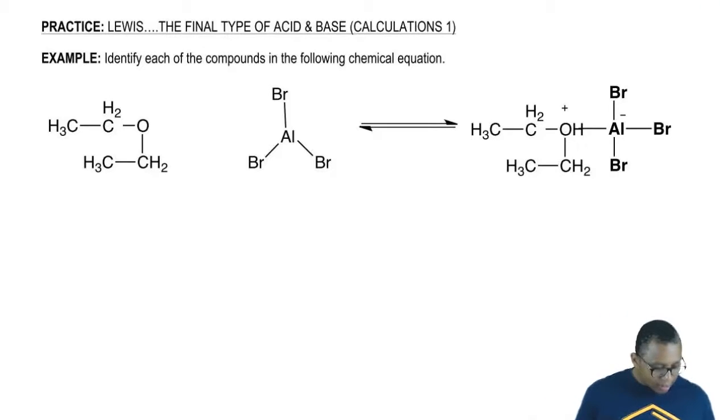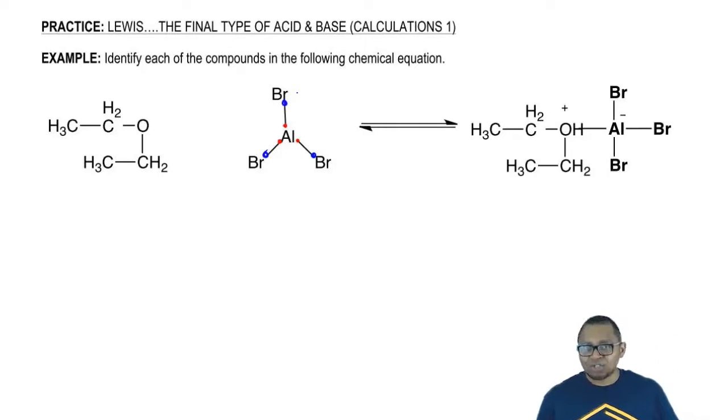If we take a look here, we have these two compounds merging together to give us this one product. Aluminum is a group 3A element. It has three valence electrons that it's using to make those bonds. It doesn't have a lone pair. We should also realize that it is sharing an electron from each one of the bromines. In total, aluminum has six electrons around it.